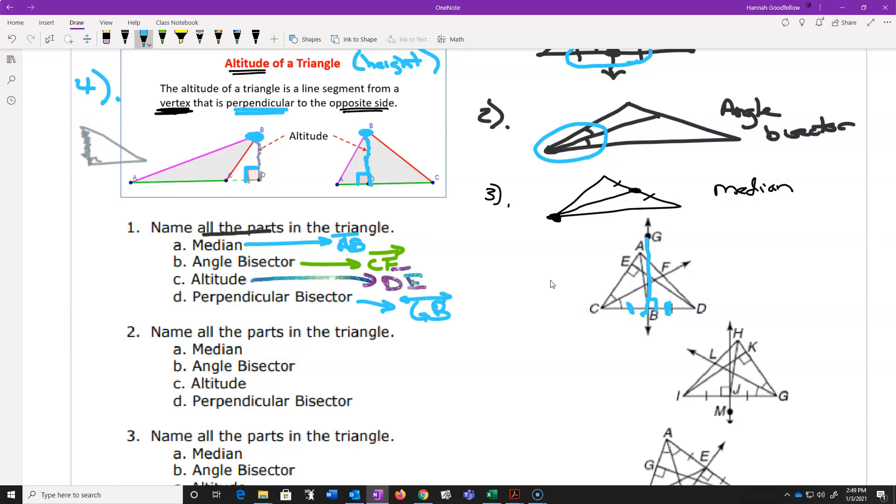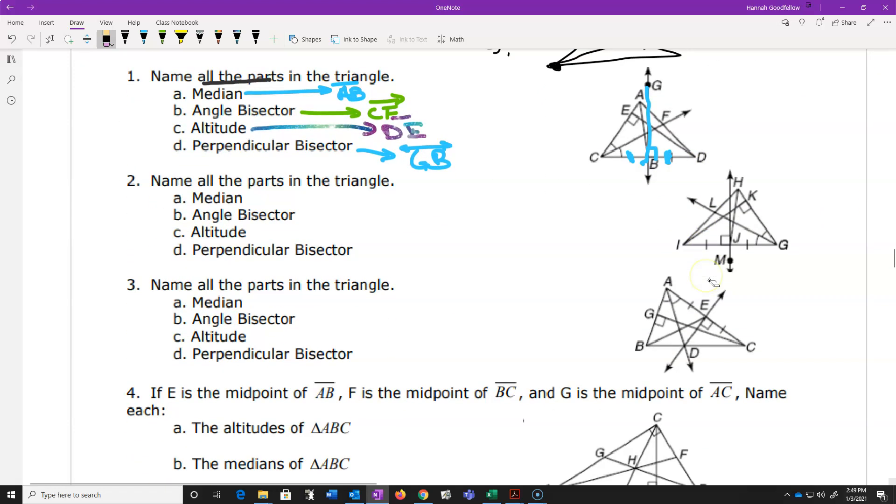Now, your second semester geo students, you shouldn't be messing up with notation. If it's a line segment, it's a line segment. If it's a ray, it's a ray. If it's a line, it's a line. Get the correct notation on there. That kind of stuff's going to get docked in second semester, and you can't afford it just because you're being lazy on that kind of stuff.